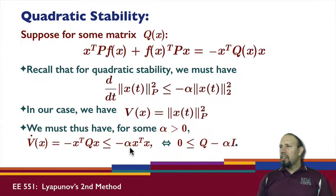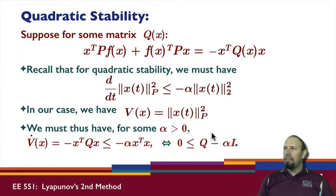So this inequality, since this is true for any non-zero x, this is equivalent to saying that if I take this over to the other side, I have basically this matrix inequality. Q minus alpha I must be greater than or equal to zero. This is a positive semi-definite matrix. So if for all x, this is a positive semi-definite matrix, then we have quadratic stability.